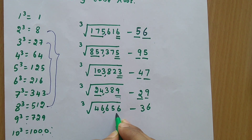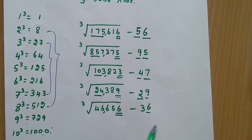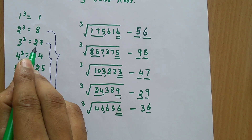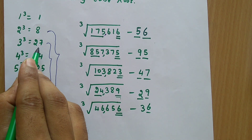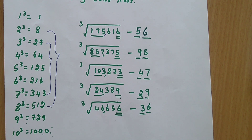Here the last digit is 6, so you mark 6 as the unit digit. Similarly, in front you have the 2-digit number 46. Below 46, which is the perfect cube? It is 27, and the corresponding cube root is 3. So mark 3 as the tens digit. Therefore, 36 × 36 × 36 gives you 46656.